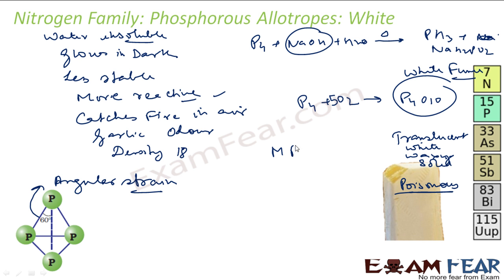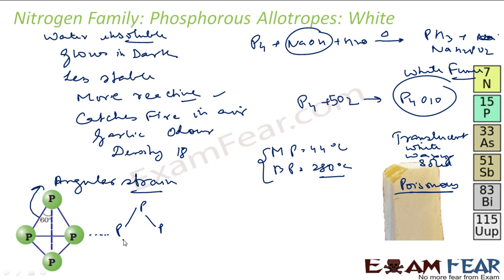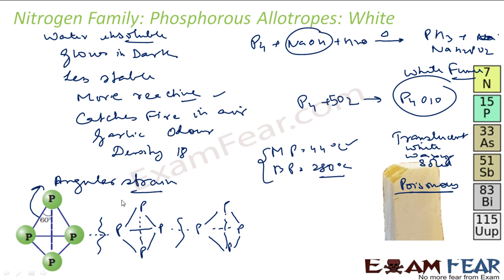The melting point of white phosphorus is 44°C but the boiling point is very high at 280°C. This is because P4 molecules are held together by weak van der Waals forces. For melting you only need to break some of these bonds, so the melting point is low, but for boiling you need to break all remaining bonds, so the boiling point is high.